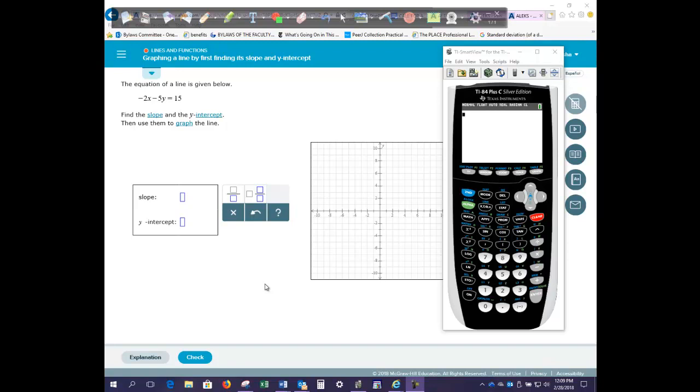In this video, we want to graph a line by first finding its slope and y-intercept. In order to do that, we have to look at the information we're given.